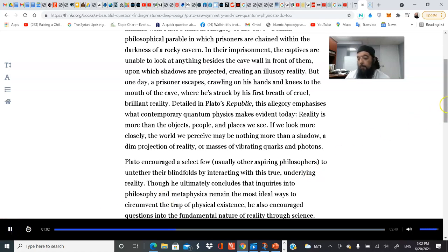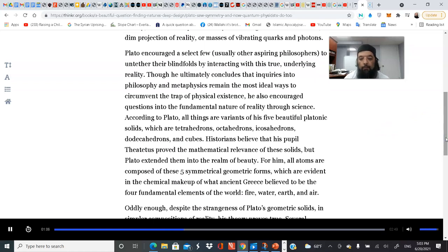Plato encouraged a select few, usually other aspiring philosophers, to untether their blindfolds by interacting with this true underlying reality. According to Plato, all things are variants of his five beautiful platonic solids: tetrahedrons, octahedrons, icosahedrons, dodecahedrons, and cubes. Historians believe that his pupil Theatetus proved the mathematical relevance of these solids, but Plato extended them into the realm of beauty.